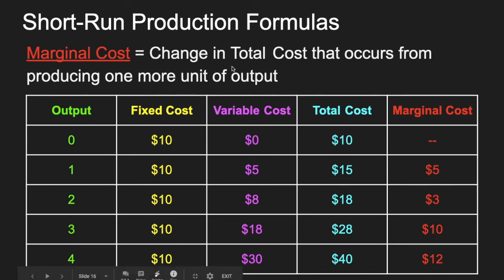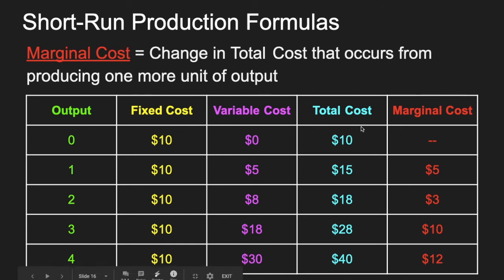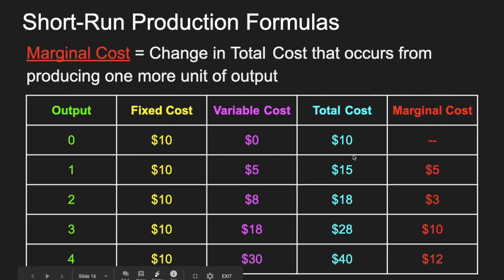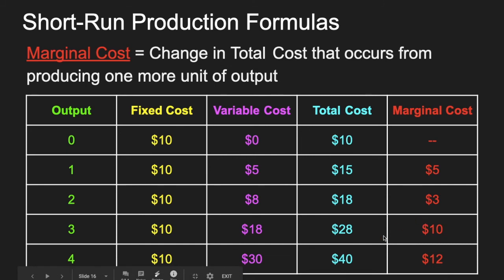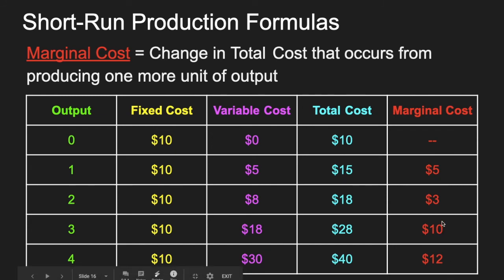We also need to learn about marginal cost. It's simply the change in total cost for each extra unit produced. The total cost goes 10, 15, 18, 28, 40. So marginal cost: from 10 to 15 is 5; from 15 to 18 is 3; from 18 to 28 is 10; from 28 to 40 is 12. So it starts higher, comes down to 3, and then swoops back way up to 10 and 12.